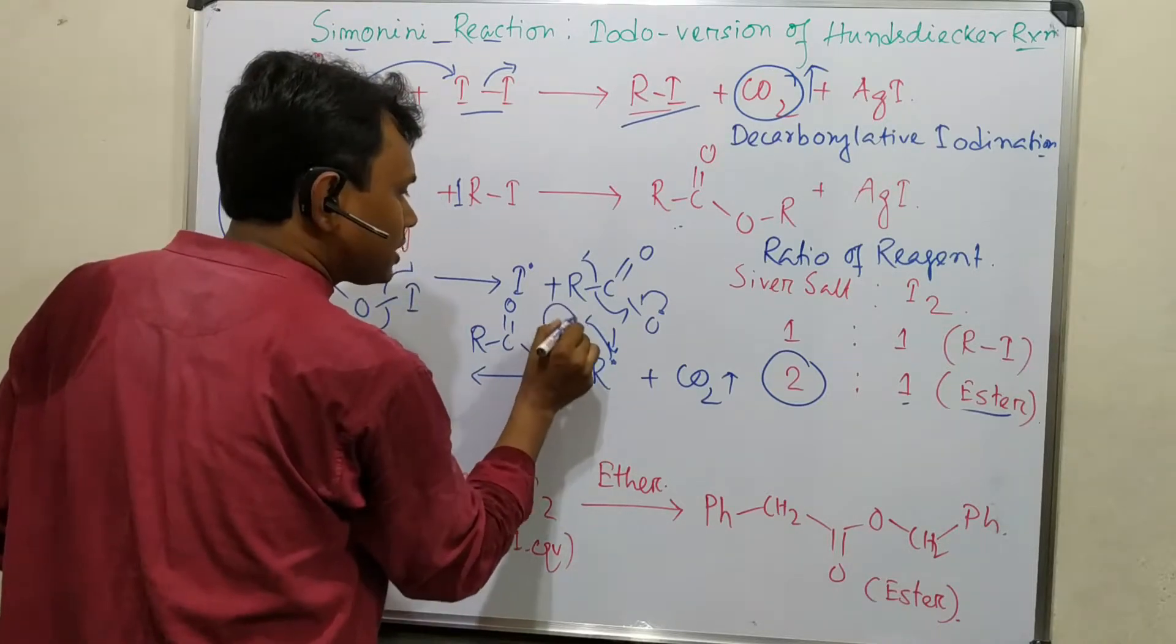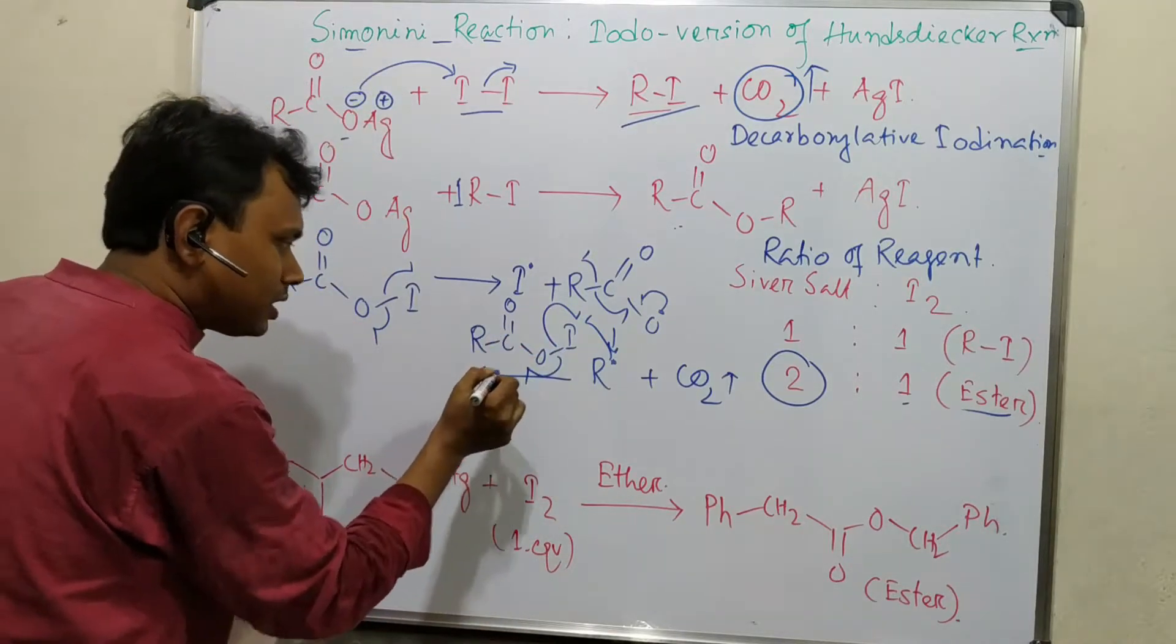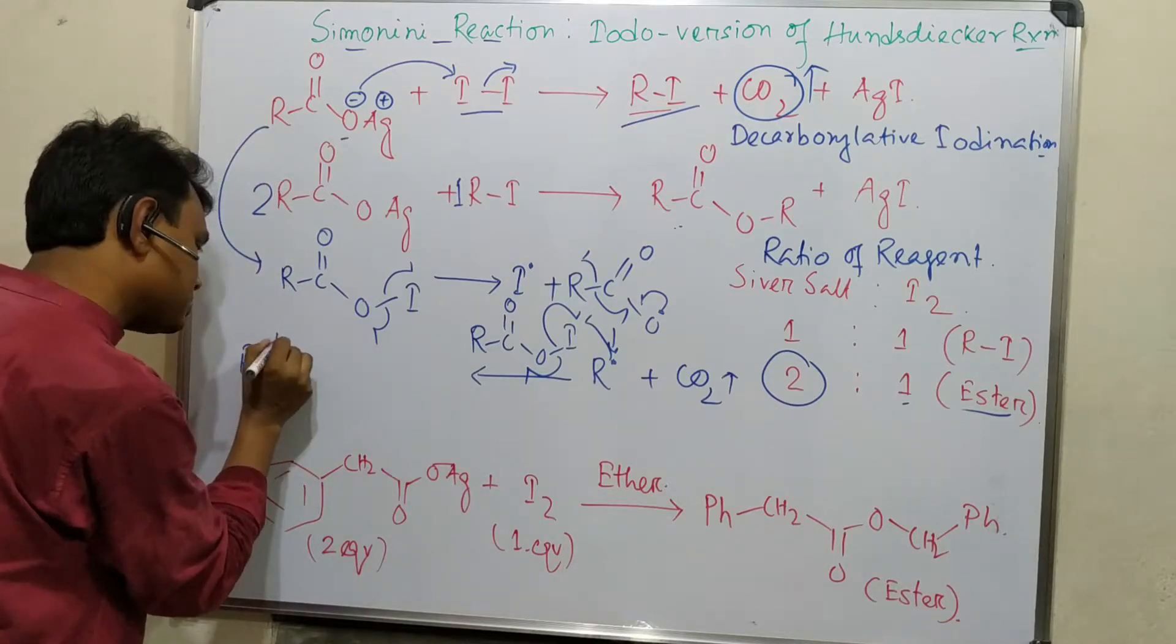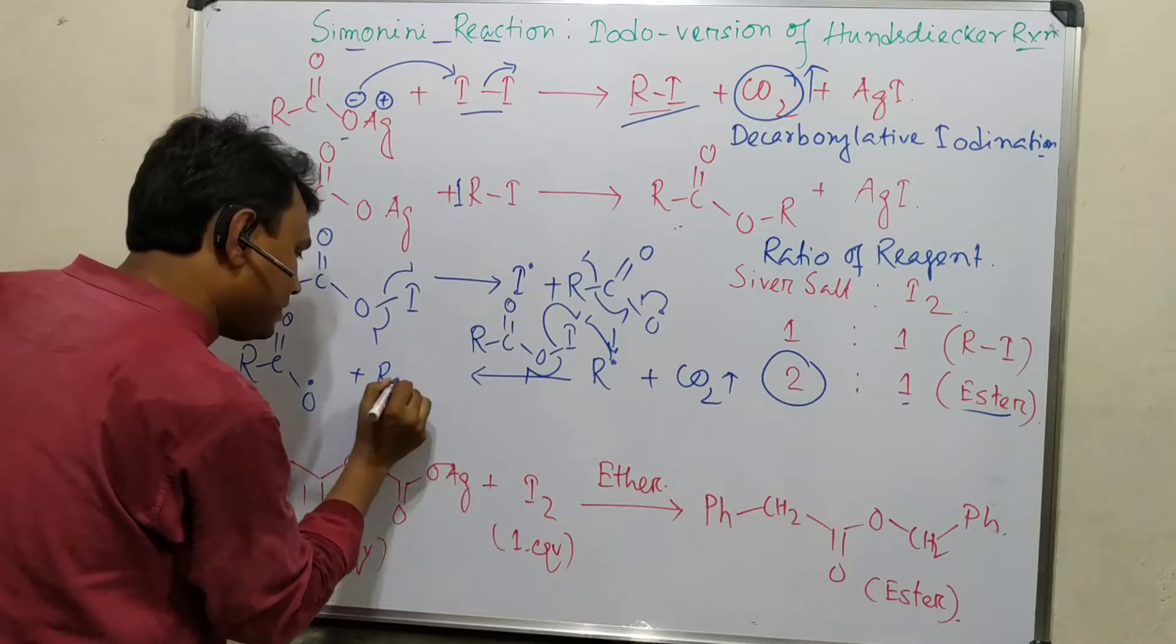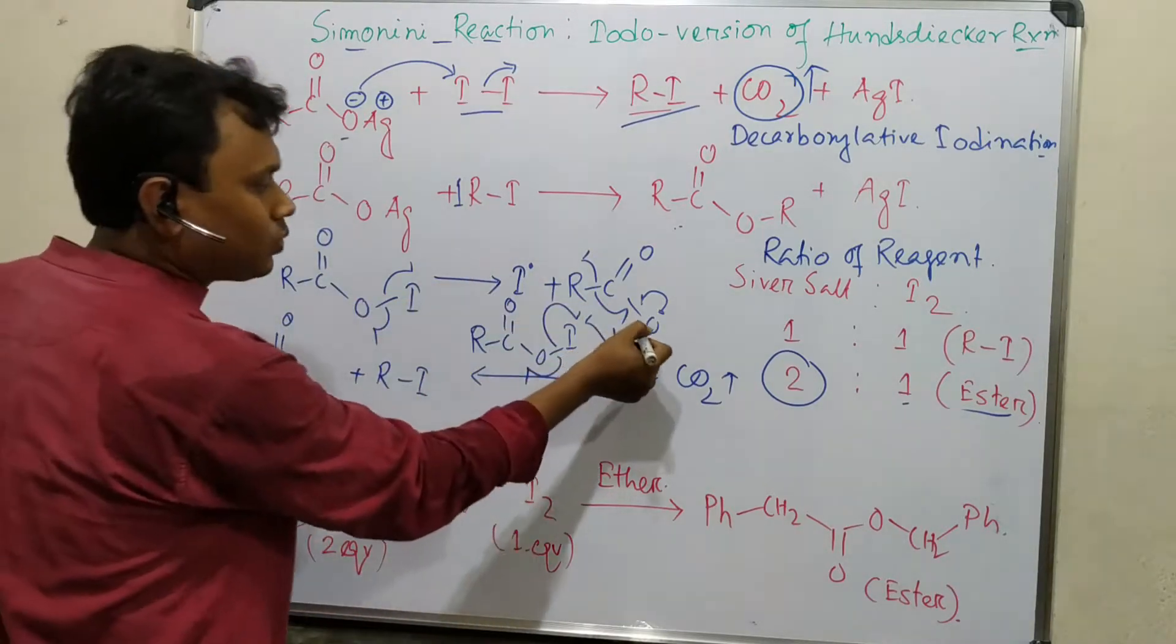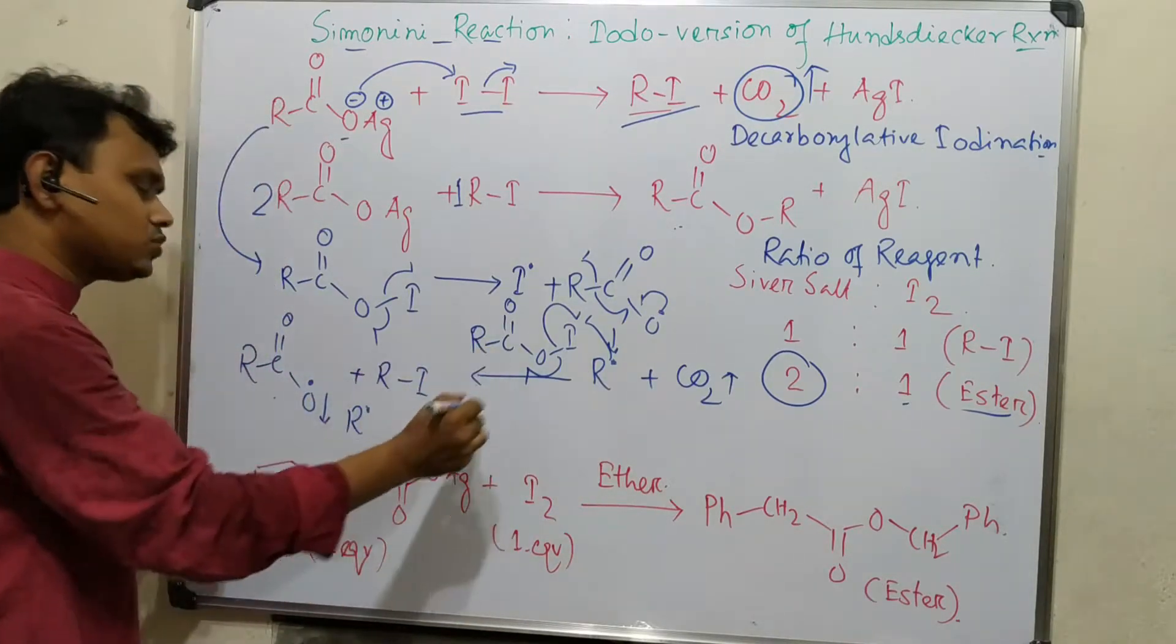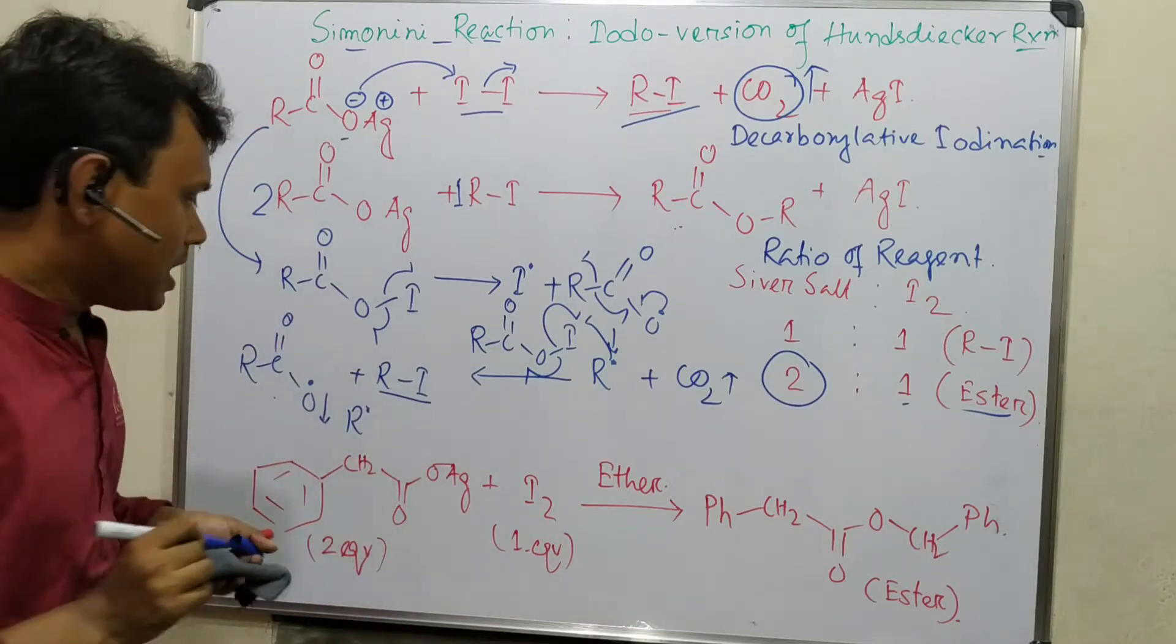This electron transfer produces R-CO-O radical again and R-I. The oxygen radical can again break the bond and produce R dot. In this way the reaction continues as a chain reaction. So R-I is produced.